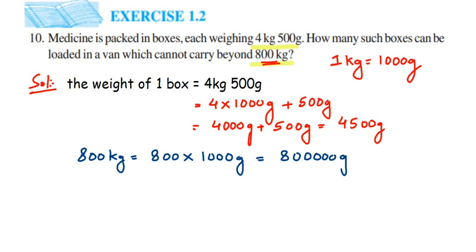Now we have to get the answer, so we have to divide these two numbers. Number of boxes will be the number of boxes which we can load in a van. So number of boxes is equal to 800,000 grams divided by 4500 grams. The gram units will get cancelled, so you can ignore this gram unit. We're going to divide this.